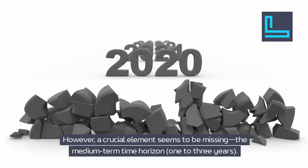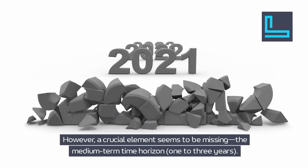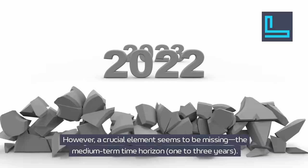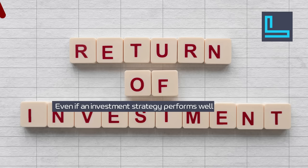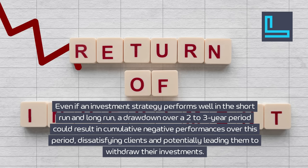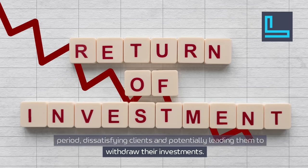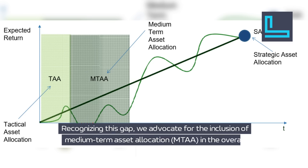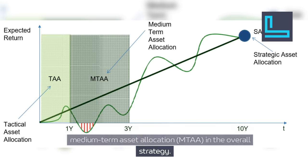However, a crucial element seems to be missing: the medium-term time horizon of one to three years. Even if an investment strategy performs well in the short run and long run, a drawdown over a two to three-year period could result in cumulative negative performances, dissatisfying clients and potentially leading them to withdraw their investments. Recognizing this gap, we advocate for the inclusion of medium-term asset allocation (MTAA) in the overall strategy.